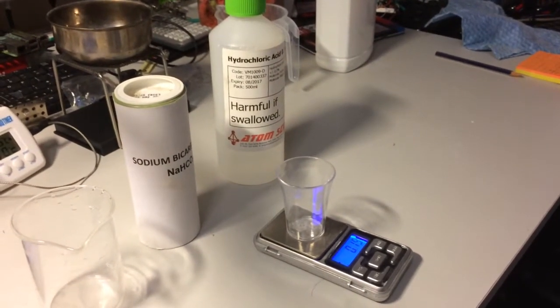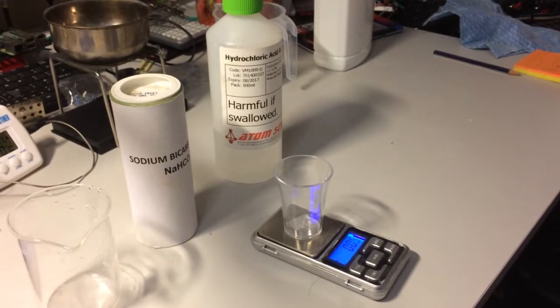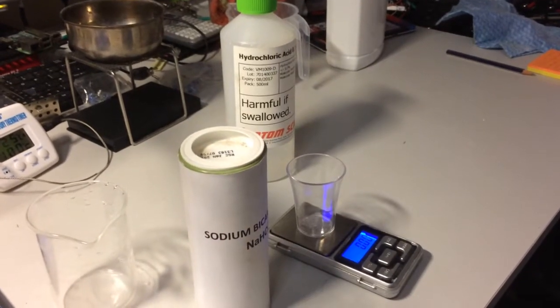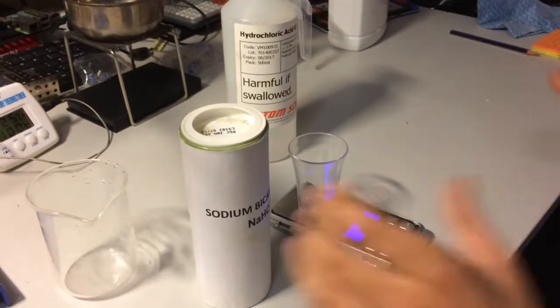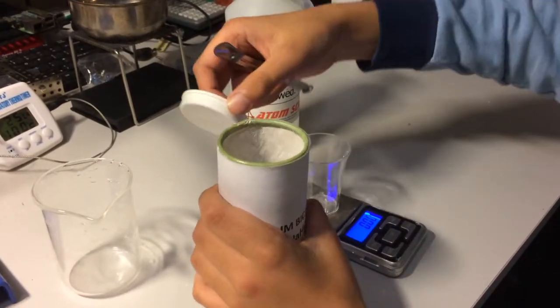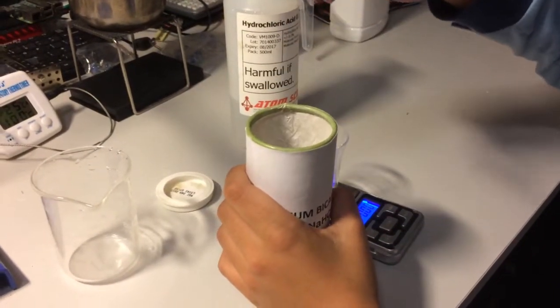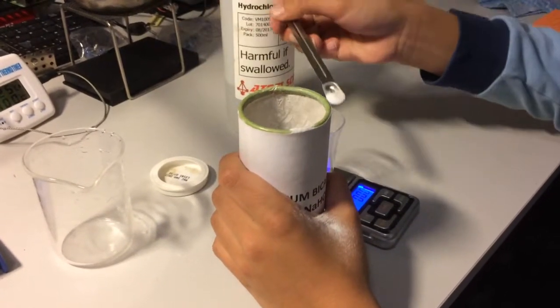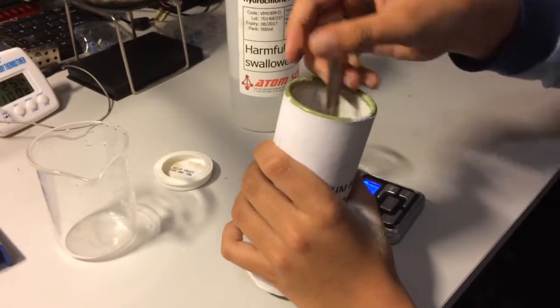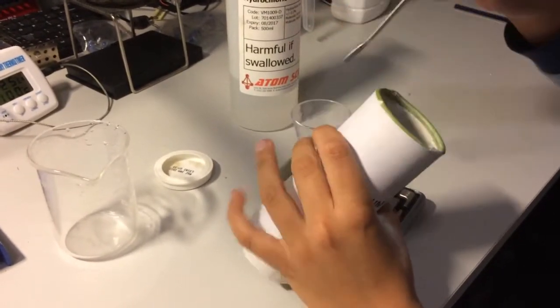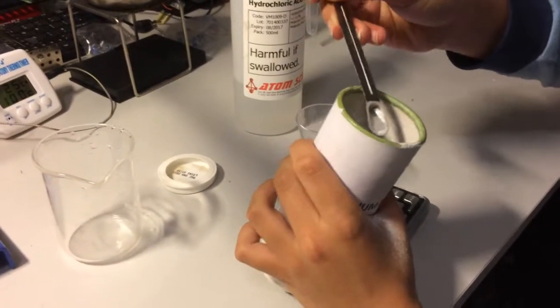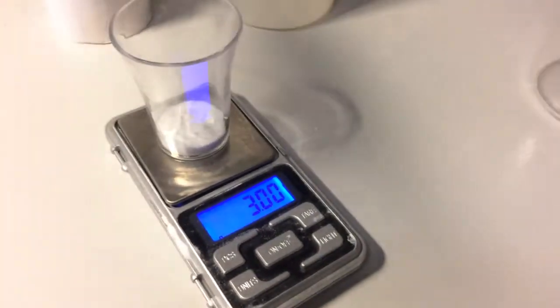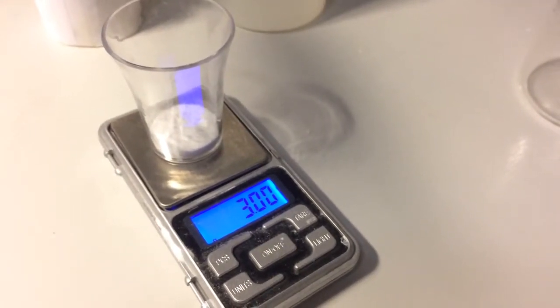Firstly, we will need to measure amounts of these substances. We'll start with the sodium bicarbonate and its formula NaHCO3. This is also used for cooking. Now as you can see, we have 3 grams of sodium bicarbonate.